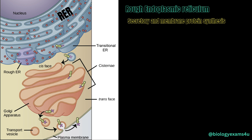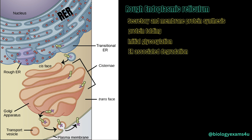Ribosomes are like nanomachines that make proteins. The RER is also the site of protein folding, especially the formation of disulfide bonds. It is also involved in processing such as initial glycosylation and quality control — meaning misfolded proteins are often degraded in the RER in a process called ER-associated degradation.